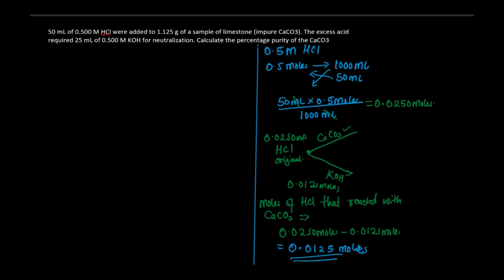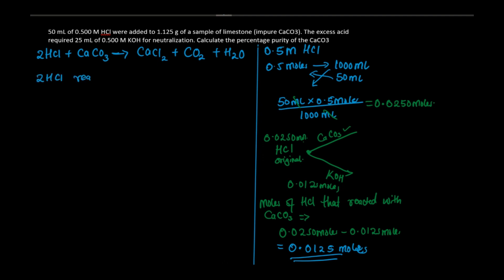Now writing the balanced chemical equation between hydrochloric acid and calcium carbonate: 2HCl + CaCO3 → CaCl2 + CO2(g) + H2O. Balancing gives a coefficient of 2 for HCl. From this, two moles of HCl react with one mole of calcium carbonate, so the mol ratio is 2:1.